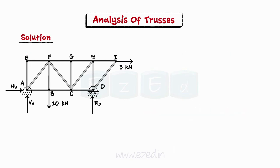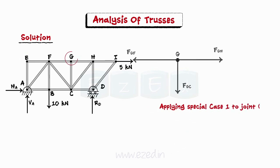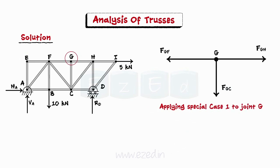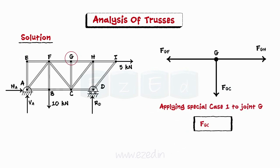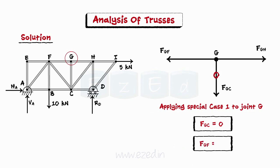Also, we can apply special case 1 to joint G. We thus conclude that force in member GC is equal to zero and force in member GF is equal to force in member GH. Thus, we have identified as many member forces as possible by inspection.